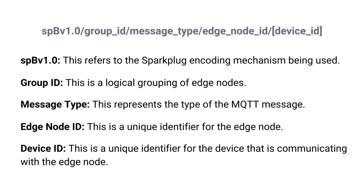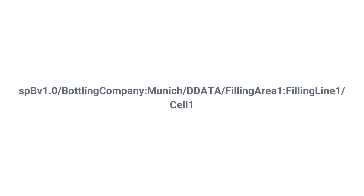In Sparkplug, the message type could be a few different values, such as NCMD for a node command, DCMD for a device command, NBIRTH for a node birth certificate, DBIRTH for a device birth certificate, NDATA for node data, or DDATA for device data. The edge node ID is a unique identifier for the edge node — a device that communicates directly with the MQTT server. Device ID is a unique identifier for the device communicating with the edge node. Taking a company as an example, you can apply Sparkplug's defined topic namespace to your UNS structure in this manner.